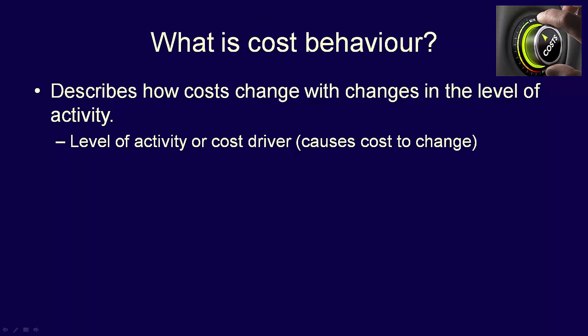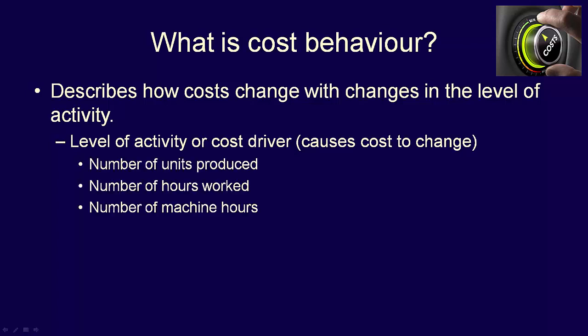What does level of activity mean? It refers to volume, and the term volume could mean a number of different things. For instance, the level of activity might refer to the number of units produced, but it could also mean the number of hours factory workers work, or the number of hours machines are running to produce a product. The level of activity is also called a cost driver, because it is the activity that causes the costs to change, so they drive costs.